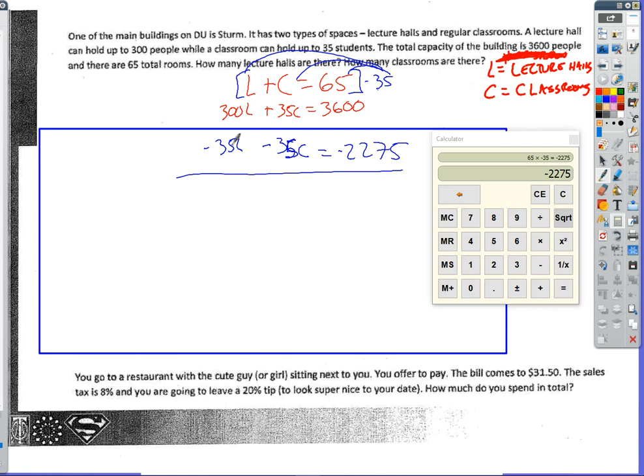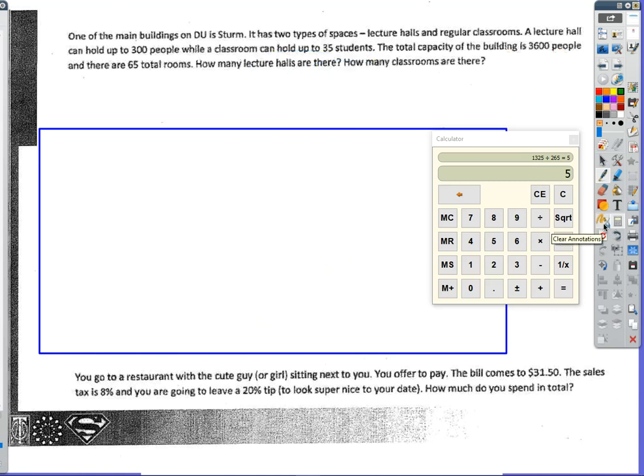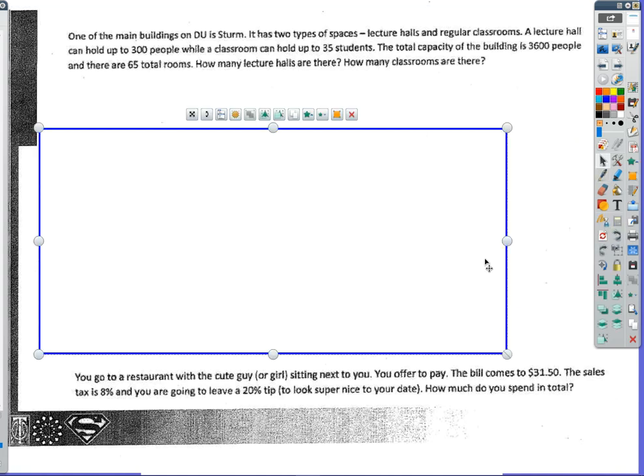So 300L minus 35L is 265L. These will cancel out because they're opposites. And this is equal to, I'm going to add it to 3600, 1325. Divide both sides by 265, and L is equal to 5. I have 5 lecture halls. Well, if I have 5 lecture halls and 65 total rooms, that means I have 60 classrooms as well. I think I may have exaggerated the number of classrooms in this problem, but that is alright.